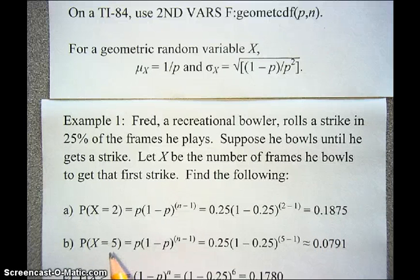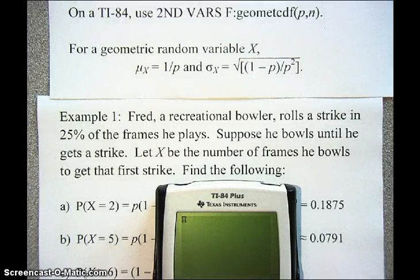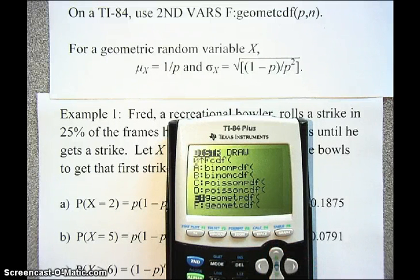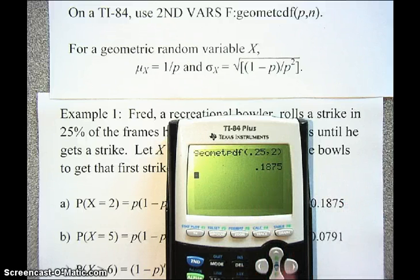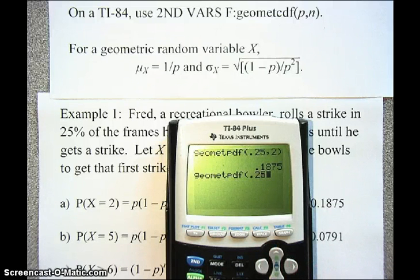For the probability that X equals 5, we plug in N equals 5 and get 0.0791. You can verify these on the calculator by going to 2nd VARS, scrolling to geometric PDF, entering 0.25 as the probability of success, and the trial number — 2 or 5 — as N. The calculator gives the same results: 0.1875 for X equals 2 and 0.0791 for X equals 5.